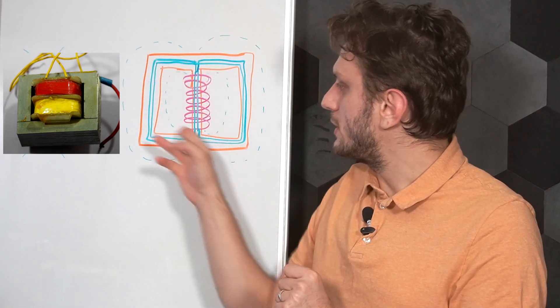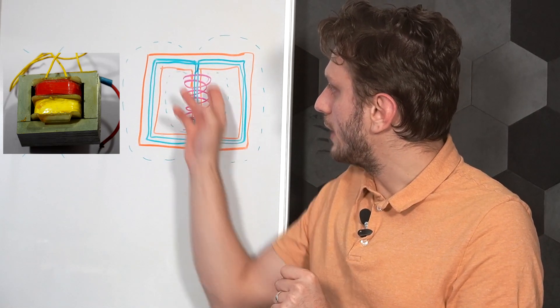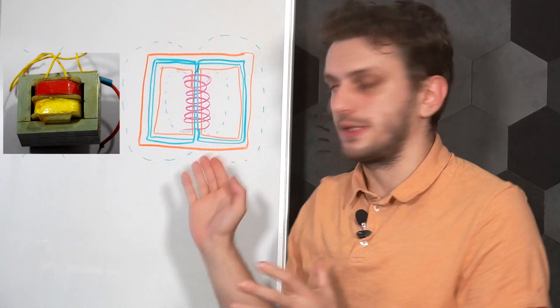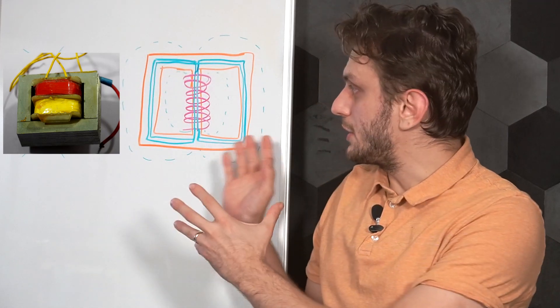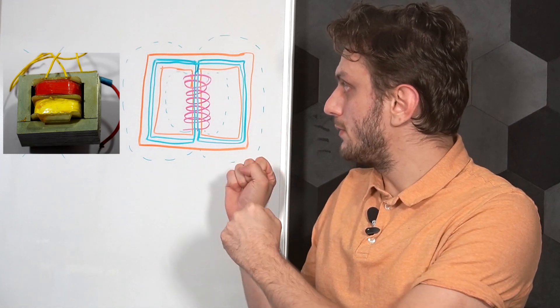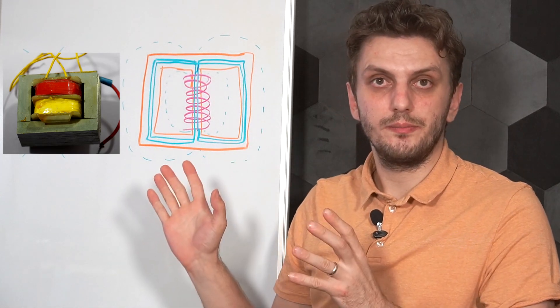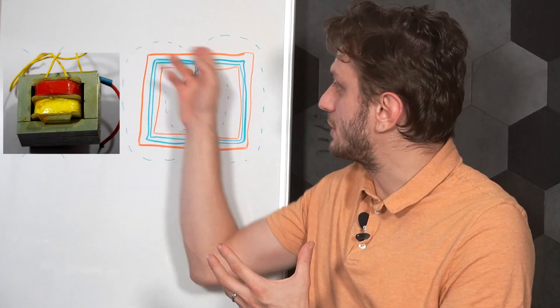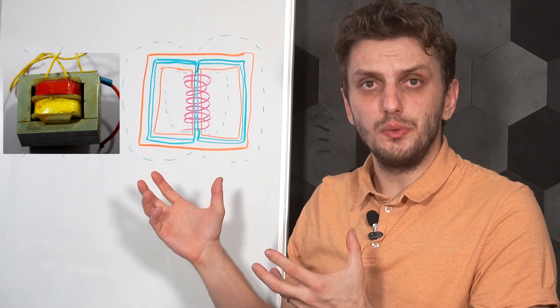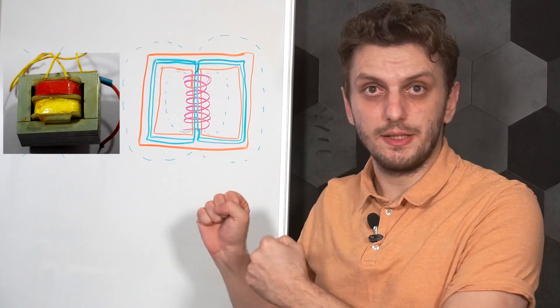Some of these field lines will still close in the air around the inductor, either inside of the core or outside of it. This is because of the uneven nature of the EI core - its section is not constant, its geometry is not constant, you have a bunch of right angles, and there's nothing really to keep the field lines contained.